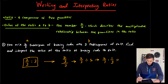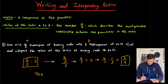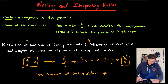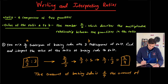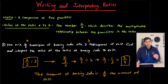We're going to multiply straight across to get two over nine. We could write a statement and say that the amount of baking soda is two-ninths the amount of salt. So our ratio was two-thirds to three, and then our value of the ratio would be two-ninths. That's how we can write and interpret ratios.